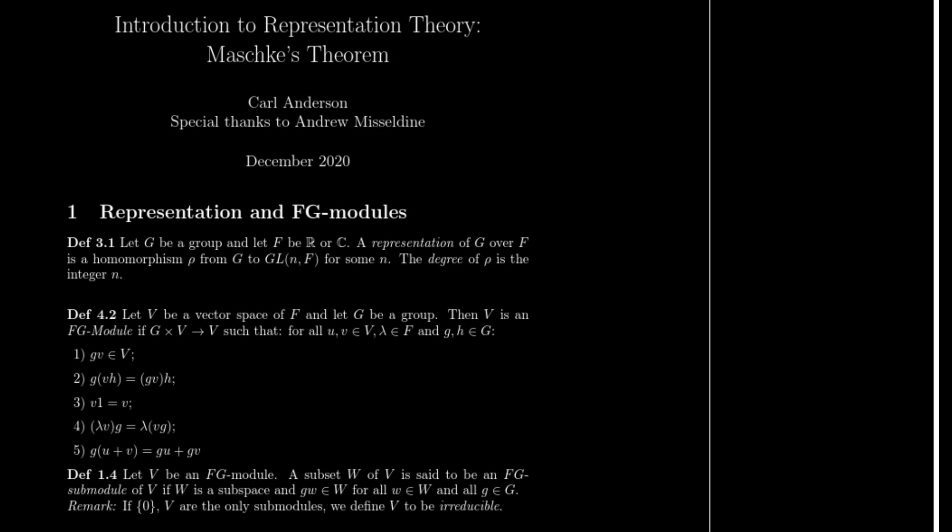If we let G be a group and let F be either the real numbers or the complex numbers, then a representation of G over F is a homomorphism ρ from G to the general linear group of n and a field of ℝ or ℂ for some n. The degree of ρ is going to be the integer n.